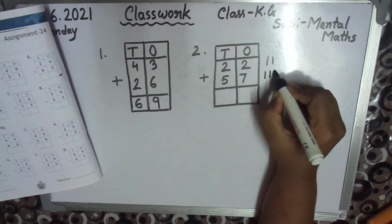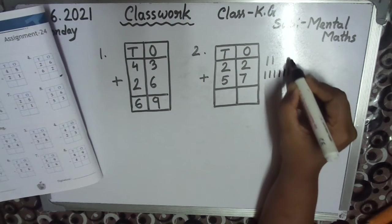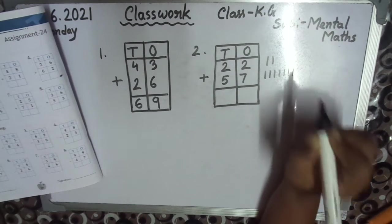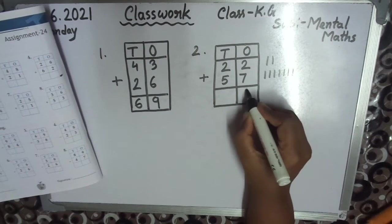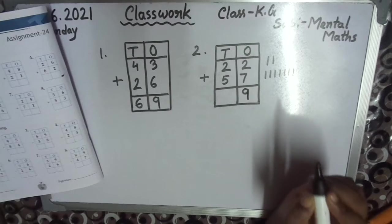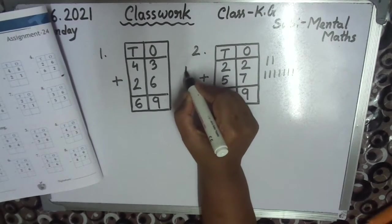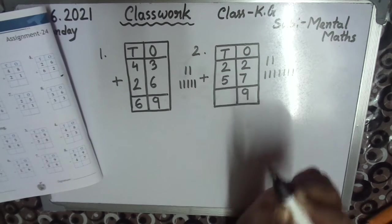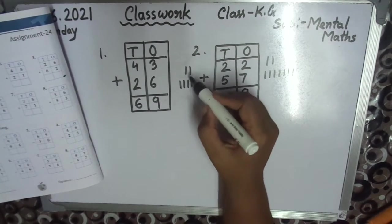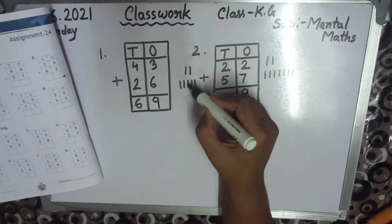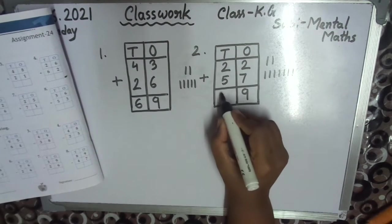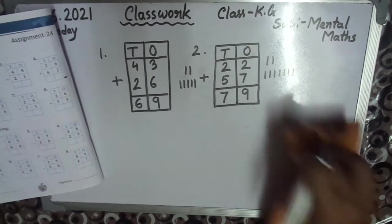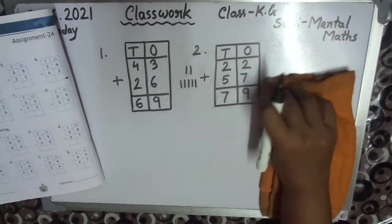2, you draw here 2. 7: 1, 2, 3, 4, 5, 6, 7. Total you count children: 1, 2, 3, 4, 5, 6, 7, 8, 9. So 9. Now left side, 2: 1, 2. 5: 1, 2, 3, 4, 5. Now you count. Answer is 7. I hope everyone understood.